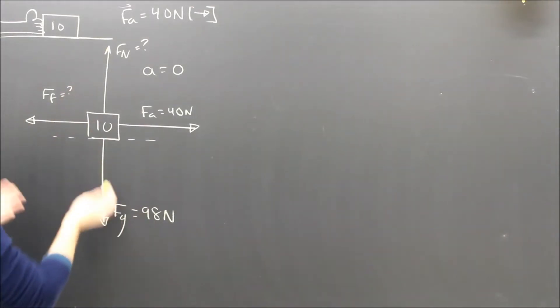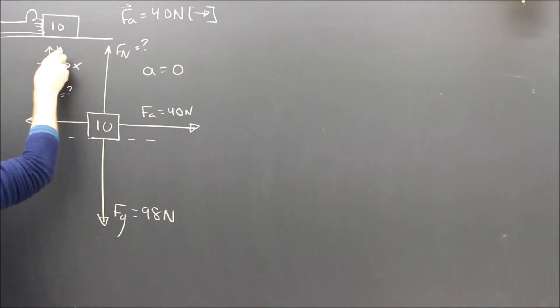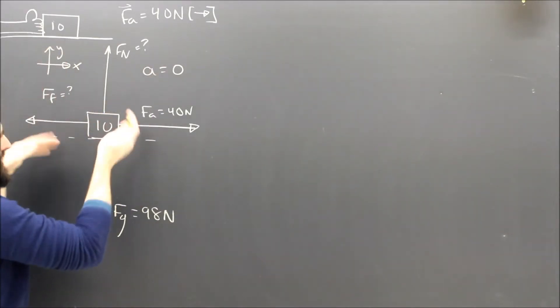So I'll put a question mark technically. I mean this is really easy. Newton's first law. A is zero. These are balanced. Those are balanced.